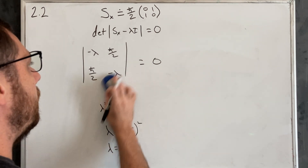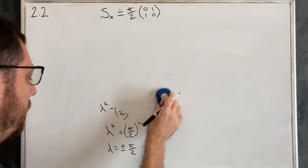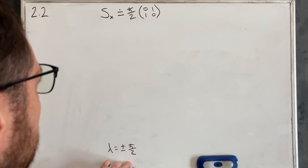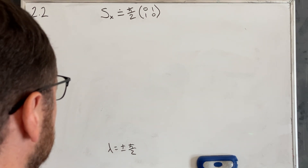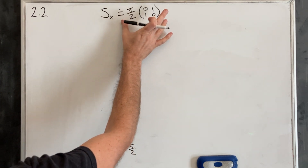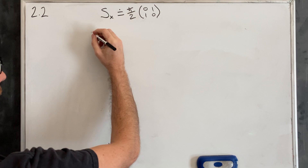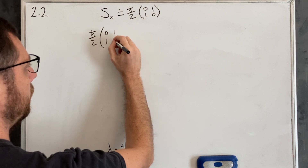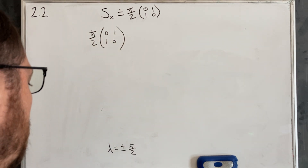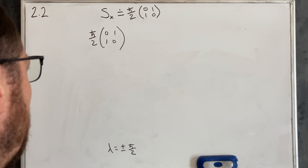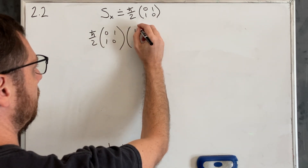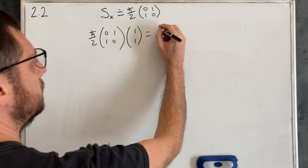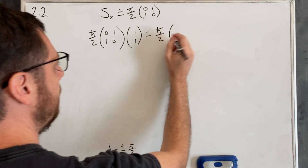Taking the square root, lambda equals plus or minus ℏ/2, which we kind of already knew, but now we have it. Those are our two eigenvalues: positive ℏ/2 and negative ℏ/2. Now to get the eigenvectors, we apply the operator (ℏ/2)[0,1;1,0] to our unknown vector [a; b] and we should get our eigenvalue ℏ/2 times that same vector back.